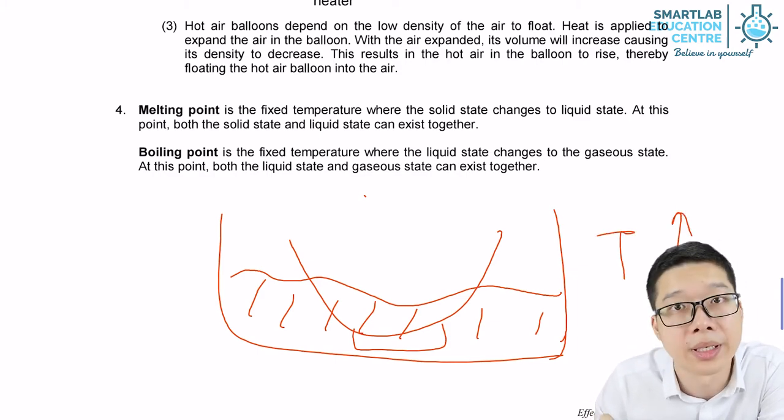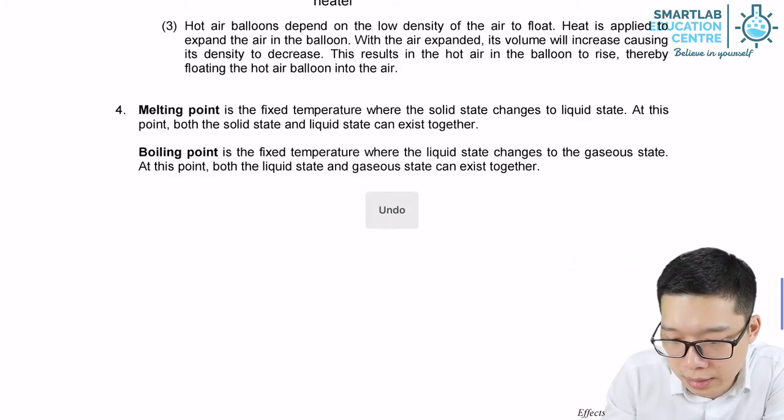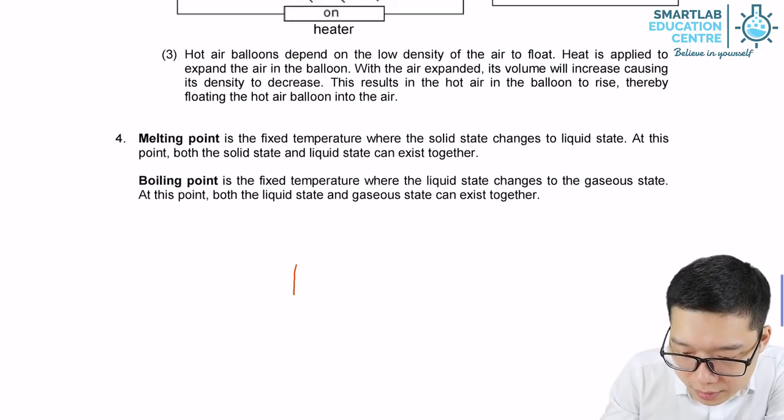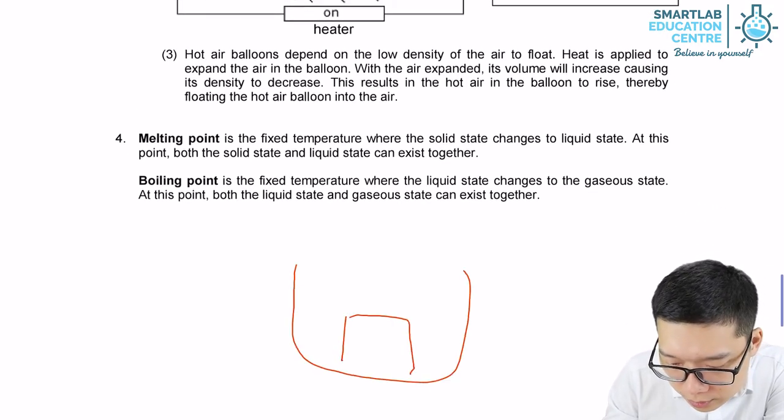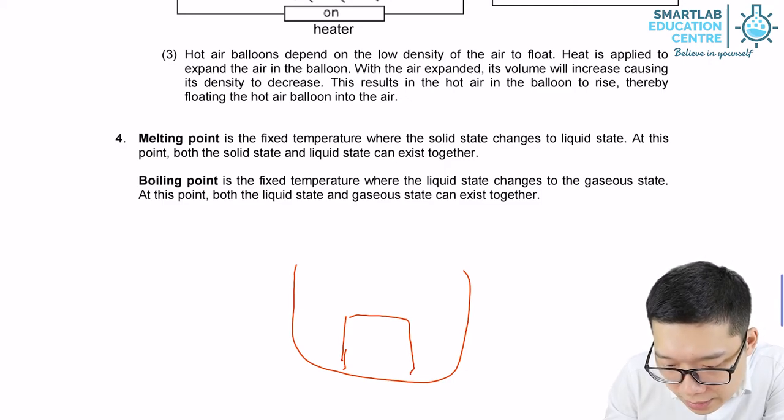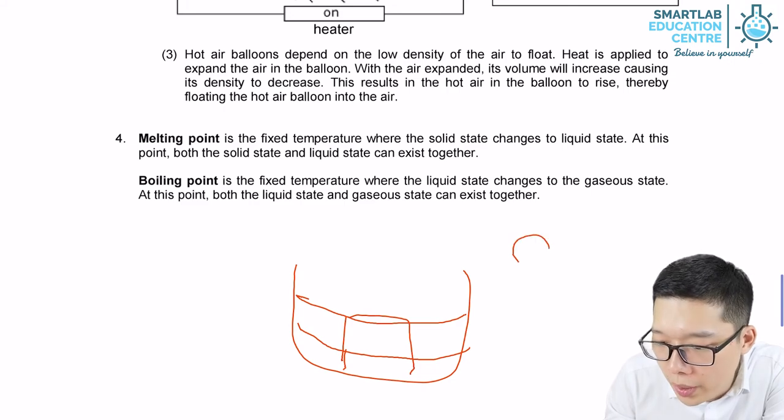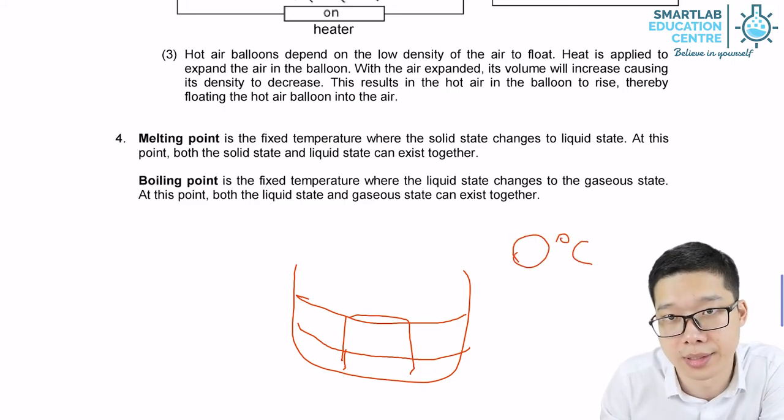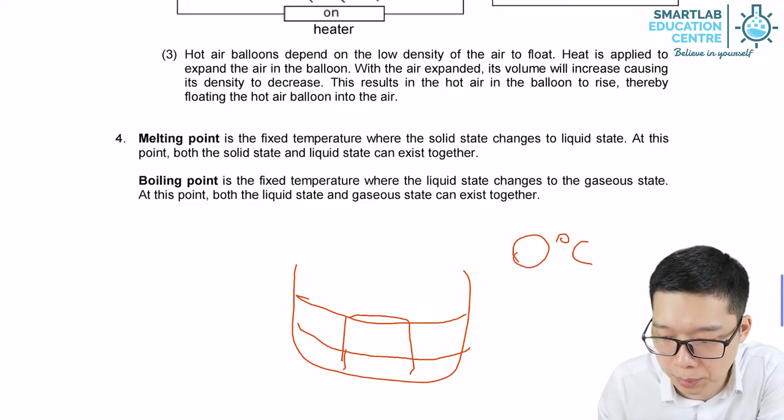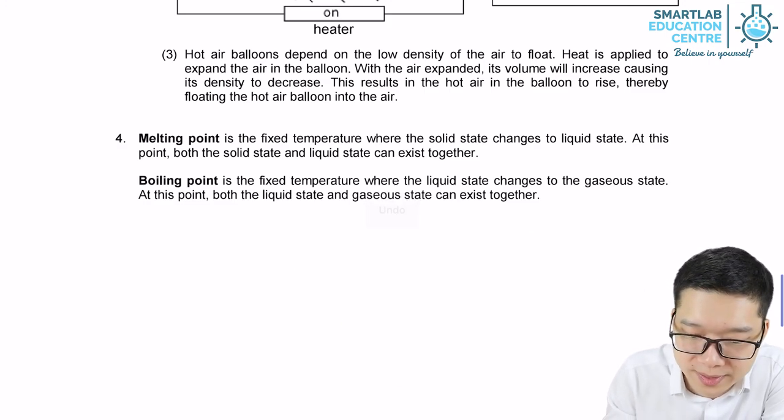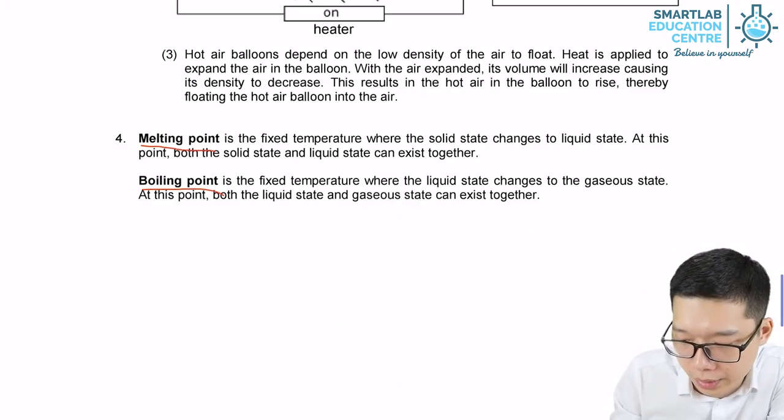But for pure substance, for example, ice cube, we observe it start melting and then finally become liquid. It all happens at 0 degrees Celsius. That's the difference. Only pure substance will have fixed melting point and boiling point.